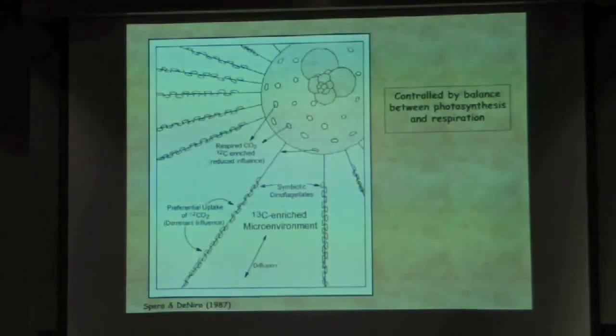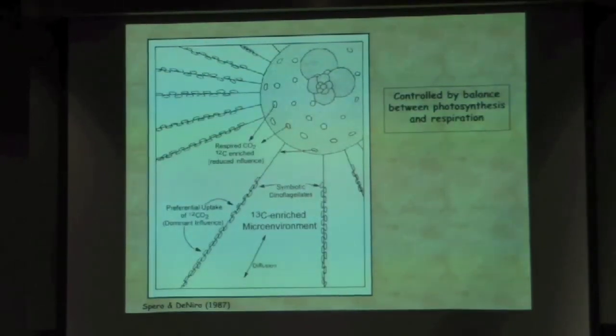The explanation for this is pretty straightforward. You've got this array of symbiotic algae that's sitting on the spine surrounding the calcifying shell. And you've got diffusion of inorganic carbon coming from seawater. As that CO2 diffuses through this spine matrix during the day, the dinoflagellates are preferentially using carbon-12 over carbon-13. So what they're doing is they're enriching the microenvironment in C13. So the higher the light, the higher the photosynthetic rate, the more enriched the delta-C13 is that winds up in the shell because that's the delta-C13 of the DIC that's sitting in this calcifying microenvironment.